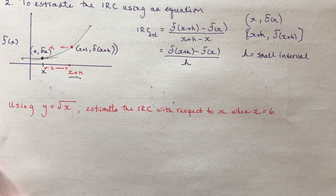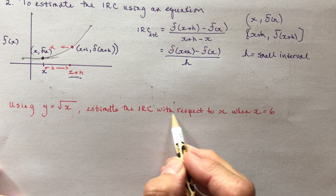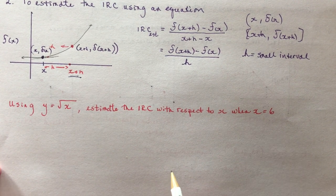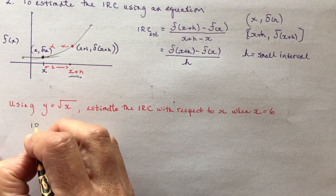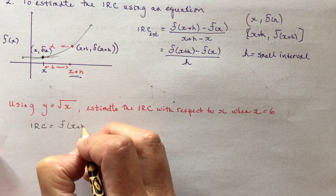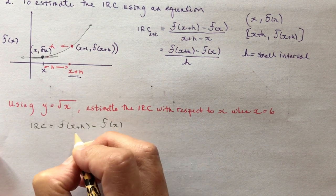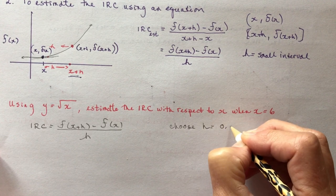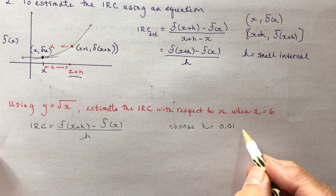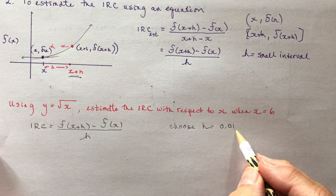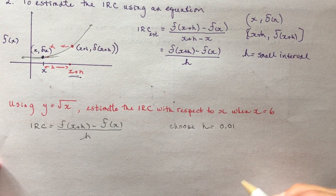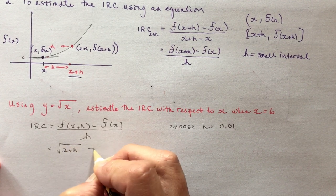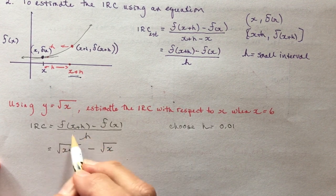Here's an example using y equals the root of x. Estimate the instantaneous rate of change with respect to x. Math is very respectful, it's always with respect to x, when x is equal to 6. That means what I want to do, I'm going to calculate the instantaneous rate of change is going to be f at x plus h minus f at x over h. I'm going to choose h equal 0.01. Now I could use 0.001, I could use 0.0001, and the closer, the smaller I make that, the more accuracy I would get to the instantaneous rate of change at that point. This for the root of x, this is going to be the square root of x plus h minus the square root of x, that's just my plugging this in here, over h.